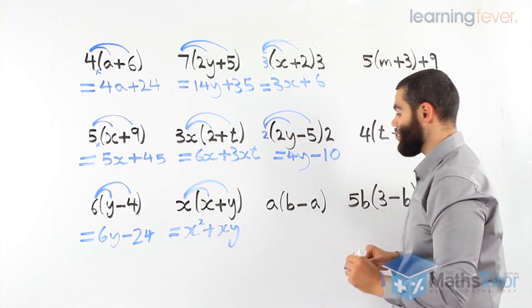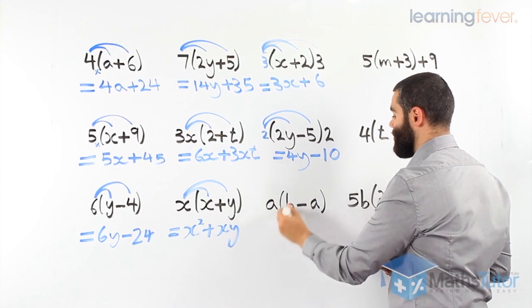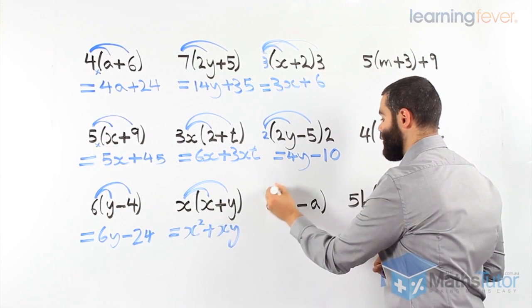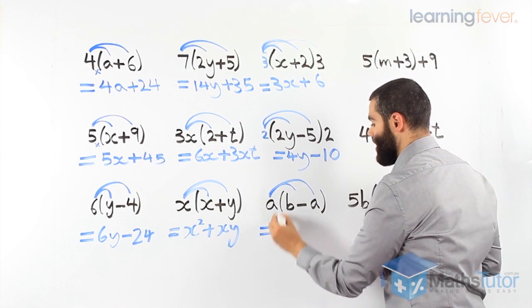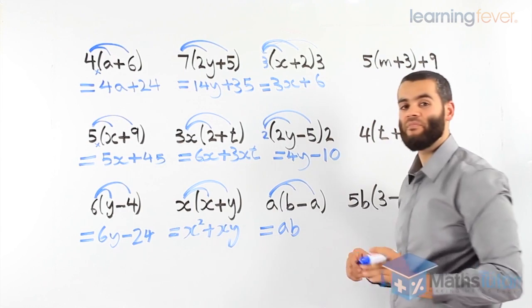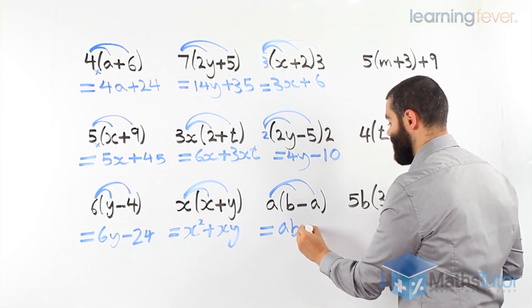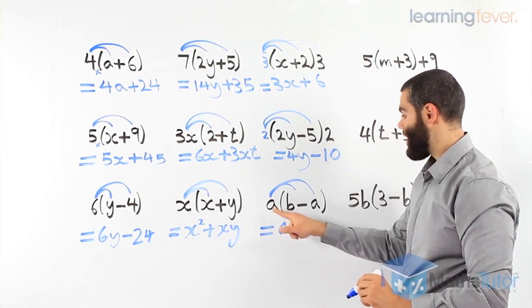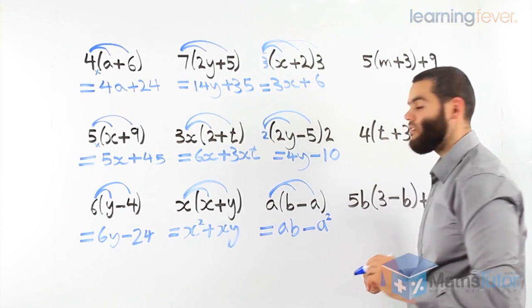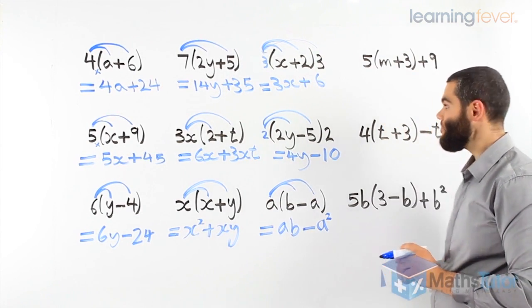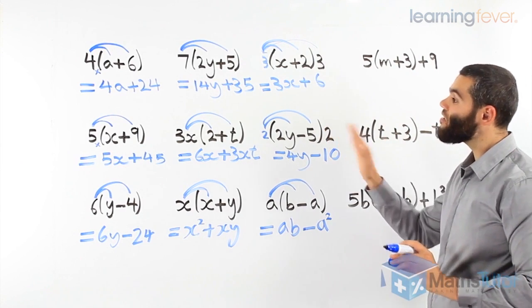In this example here, we have an a, and then in brackets, b take away a. We start multiplying. We show our arrows. a times b, ab. Then, we put our minus. a times a, a squared. See? All the same process. Once you get the hang of it, you'll become fast, and you won't make mistakes.